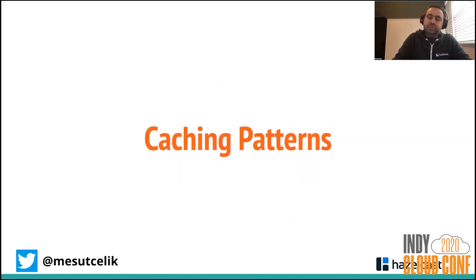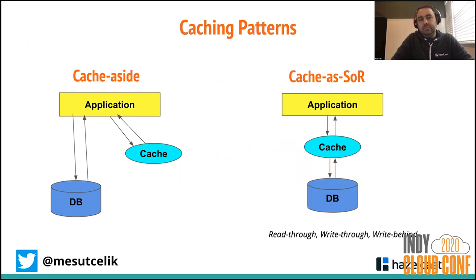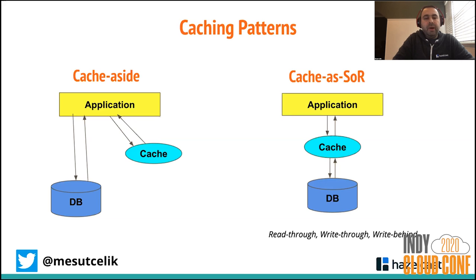Let's go through some caching patterns. There are different ones, but these are the most commonly used. Cache-aside is one solution; cache as a system of record (SOR) is another pattern. In cache-aside, your application — your microservice — is responsible for cache operations. Your microservice looks up the cache; if it's a cache miss, your application logic goes to the database, fetches data, puts it into the cache, and in subsequent calls you fetch data directly from cache for fast access.